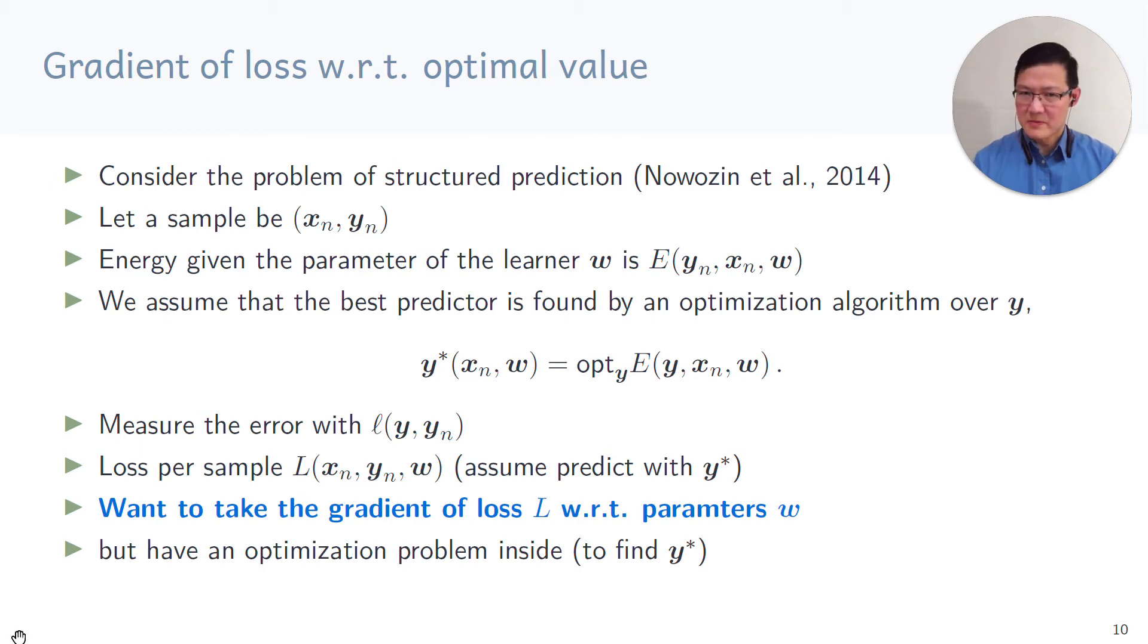So let's work through a simple example. We consider the problem of structured prediction, where we have a sample which is (x_n, y_n). And in this case, the label y_n, which is the supervised learning problem, is complex. And for a given x_n, y_n, and the parameter w, we compute the energy of the learner. We can assume that we find the best predictor by optimizing over the possible sets of Y. For example, for multi-class, we would just iterate by brute force over all the set of all possible classes. Sometimes, for structured prediction, there is a much more complicated optimization problem that we could solve to find the best possible Y. We denote the best possible Y here by y-star.